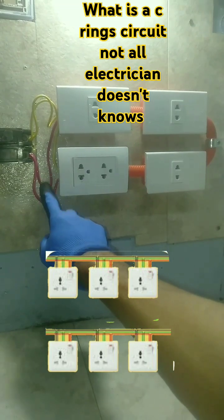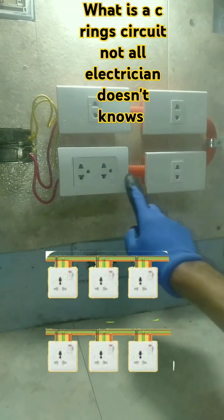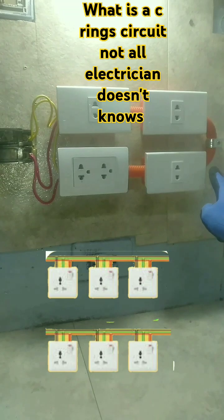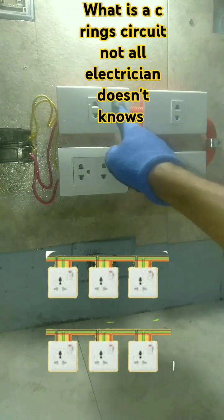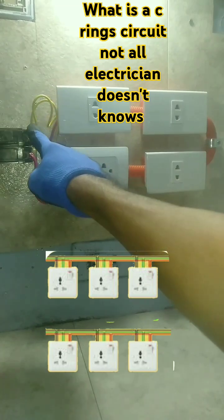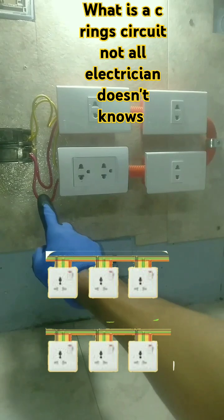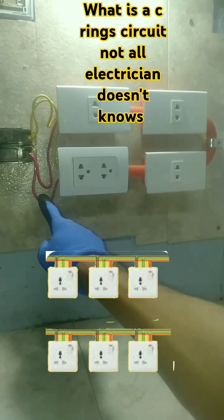This is the starting point of wiring. It goes like a circle, connected to the terminals of each socket, and at the end point returns to the circuit breaker together with the starting point. This is the starting and end point.